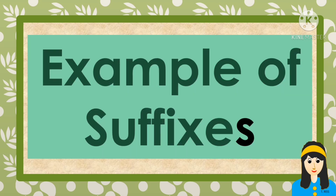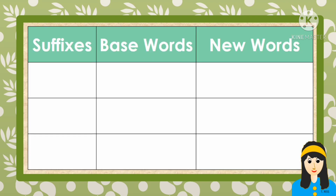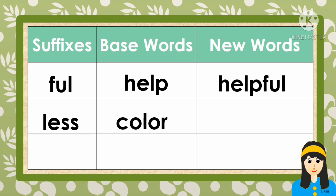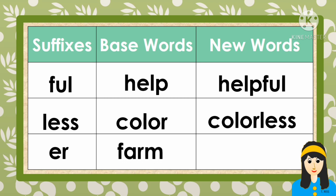Here are examples of suffixes. The first example is ful, with base word help, giving the new word helpful. The second is less, with base word color, giving the new word colorless. The third one is er, with base word farm, giving the new word farmer. Those are the examples of suffixes.